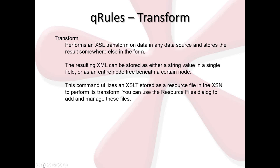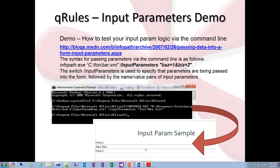The transform command performs an XSL transform on data in any data source and stores the results somewhere else in the form. You have your XSLT added as a resource file to the form — we looked at adding resource files yesterday when we talked about XML data connections. The challenge with transform is learning how to write transforms. In InfoPath, all your views are actually XSL files — XSLTs that generate the view you see when you open your form — so it's the same concept.